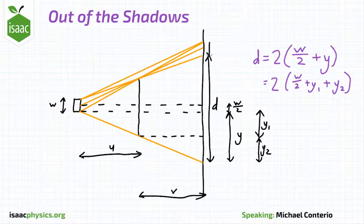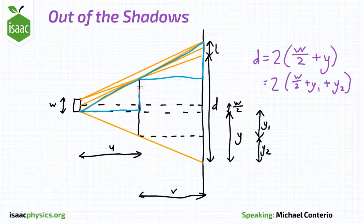This point is a distance L further along the screen from the edge of the umbral region. In a similar fashion to the first part of the question, you can use two similar triangles here, shown in blue, in order to help work out L.